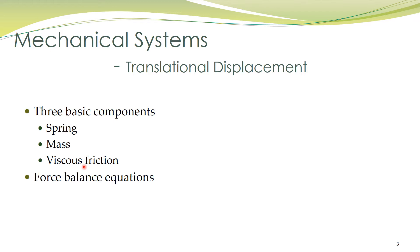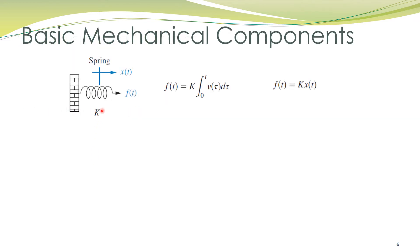The first basic component in mechanical systems with translational displacement is a translational spring, shown by this symbol. One end of the spring is fixed and cannot move; the other end has a displacement x(t) when a force f(t) is applied on it. By Hooke's law, the displacement produced in the spring x(t) is proportional to the applied force. The proportionality constant k is called the spring constant — it is an intrinsic property of the spring.